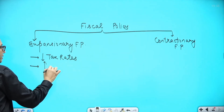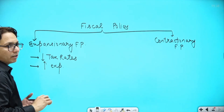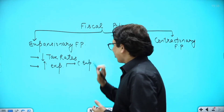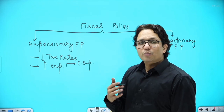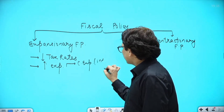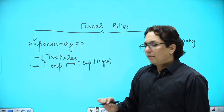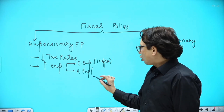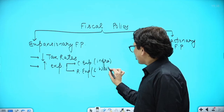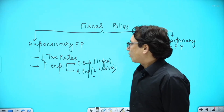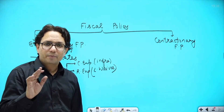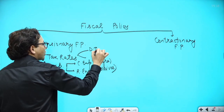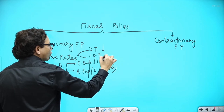Under expansionary fiscal policy, the government reduces its tax rates and increases its expenditure. The increased expenditure can be either an increase in capital expenditure — meaning more spending on creation of infrastructure — or an increase in revenue expenditure, such as the government giving various loan waivers or increasing subsidies. So in expansionary fiscal policy, the government increases its expenditure and reduces tax rates, whether direct or indirect.